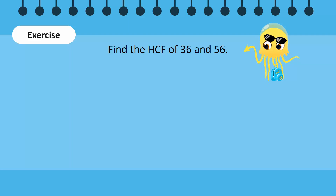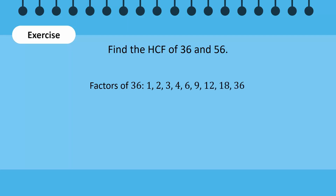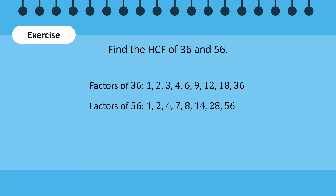First, find the factors of both numbers. The factors of 36 are 1, 2, 3, 4, 6, 9, 12, 18, and 36. The factors of 56 are 1, 2, 4, 7, 8, 14, 28, and 56.